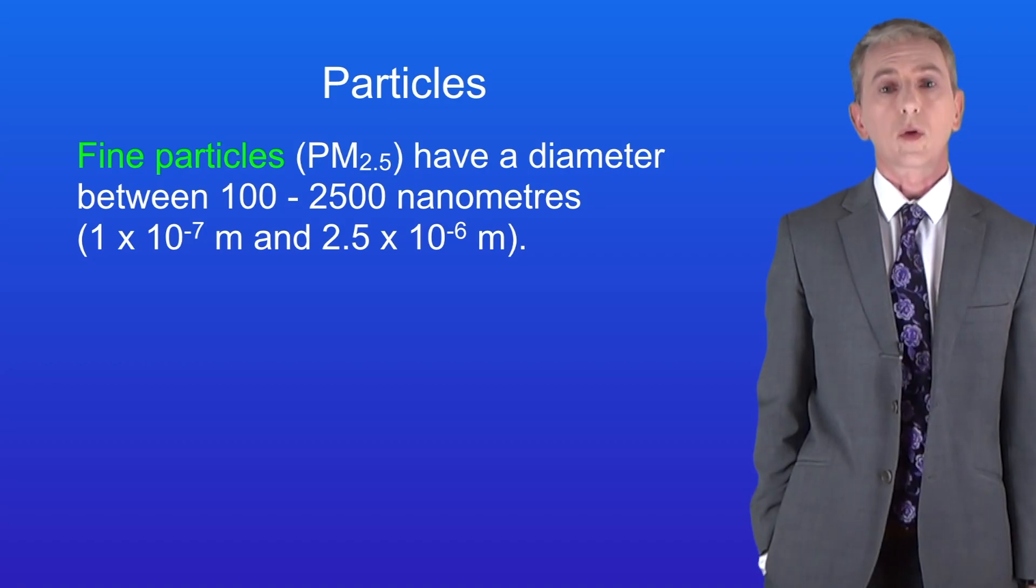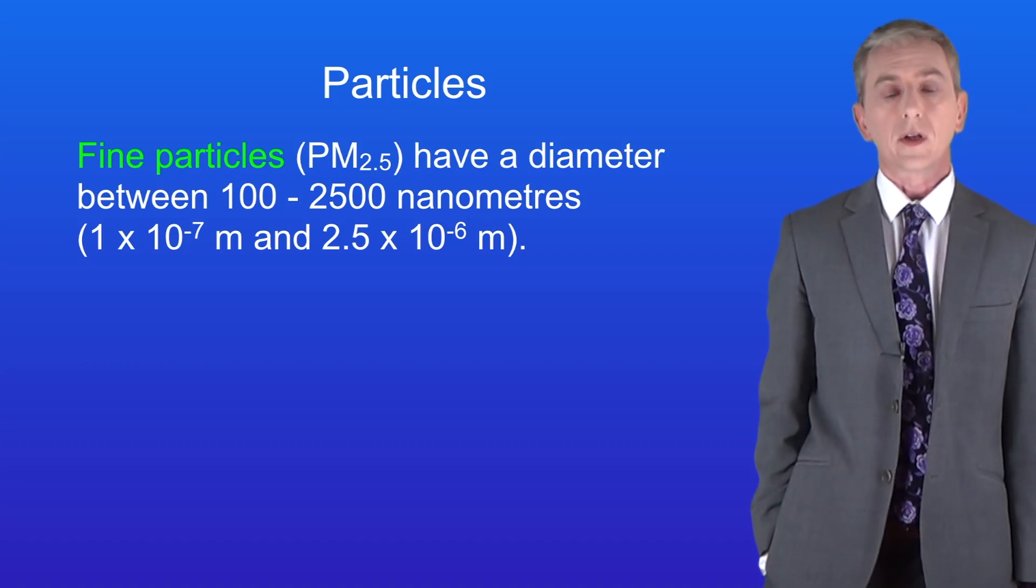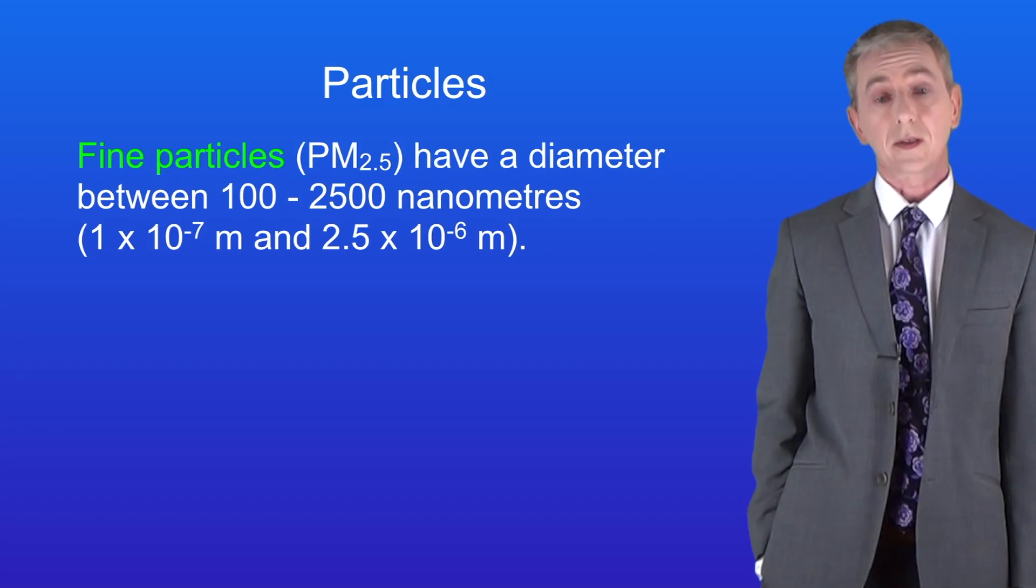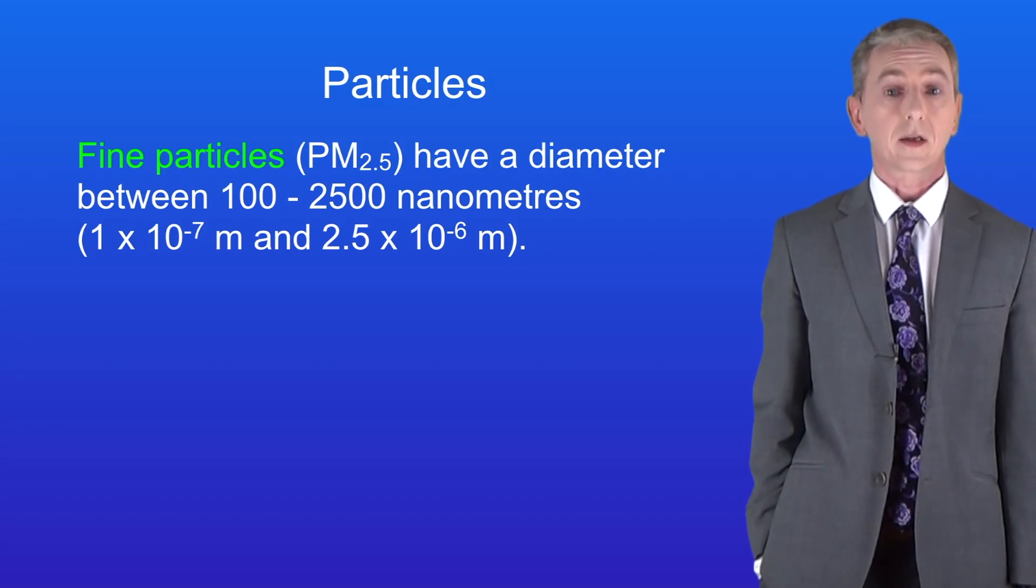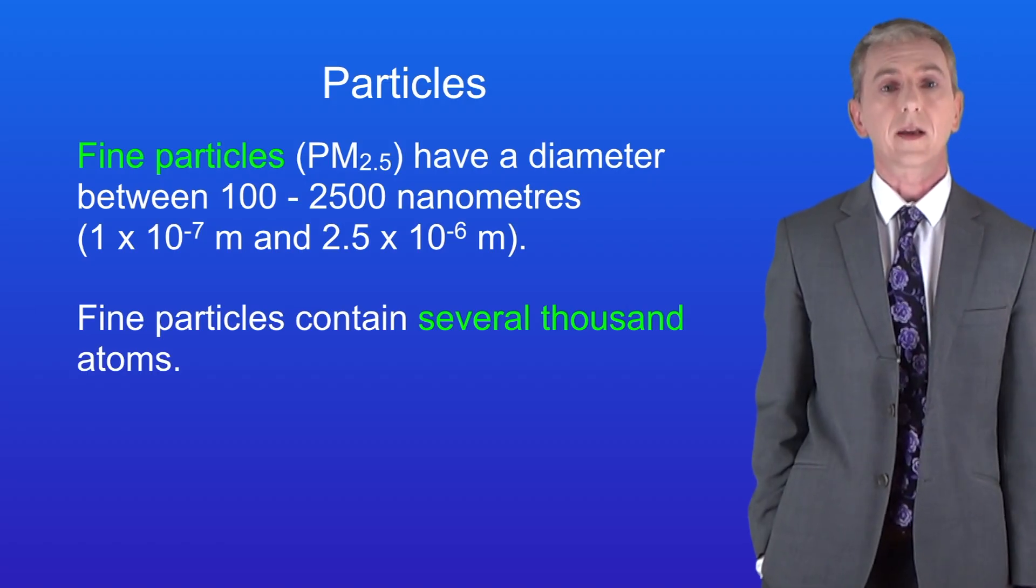Fine particles are also called PM2.5 and these have a diameter between one hundred and two thousand five hundred nanometers. In other words between one times ten to the power of minus seven meters and 2.5 times ten to the power of minus six meters. That means that fine particles contain several thousand atoms.